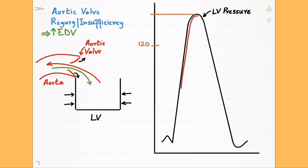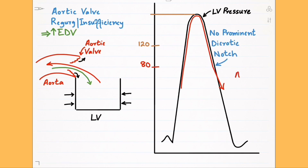Since the aortic valve is loose, the diastolic aortic pressure drops significantly below 80 millimeters of mercury. Because the aortic valve can't close properly, there is no prominent dicrotic notch in the aortic pressure curve. Absence of a prominent dicrotic notch is a huge hint that you are dealing with aortic regurgitation.